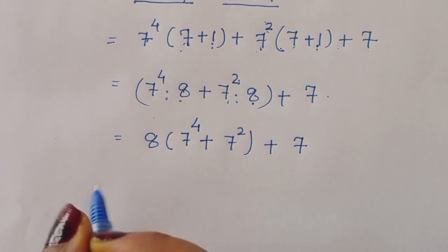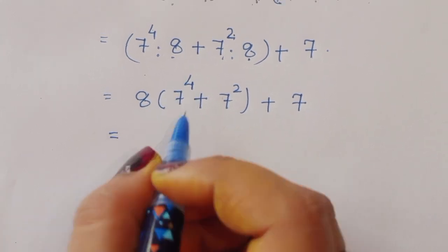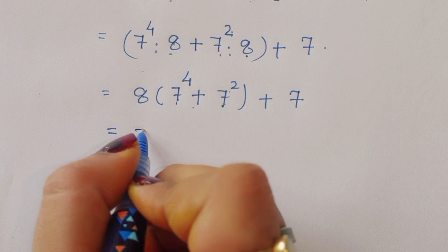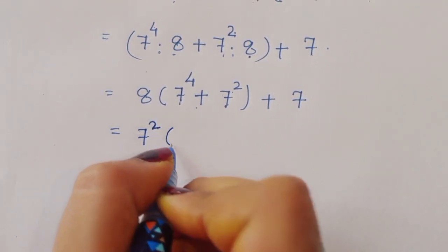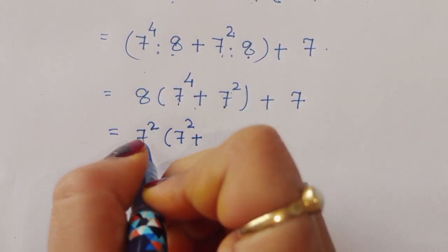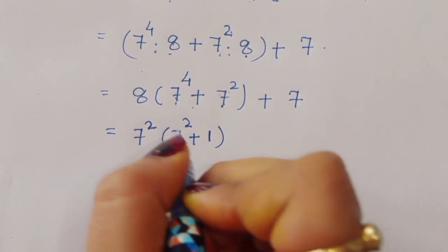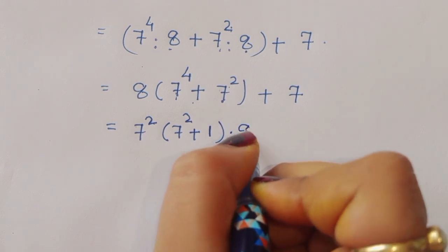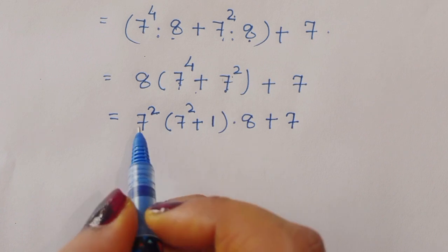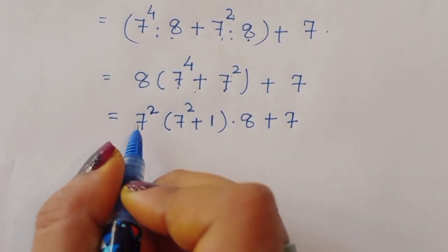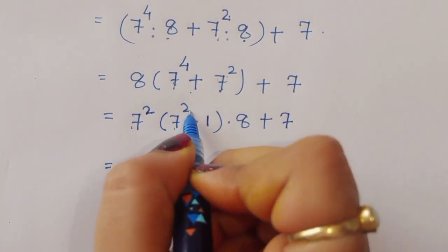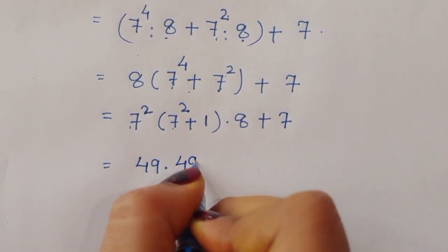From 7 power 4 plus 7 power 2, we can take 7 power 2 common. That gives us 7 power 2 times 7 power 2 plus 1, which is 49 times 49 plus 1. So the full expression becomes 49 times 50 times 8 plus 7.